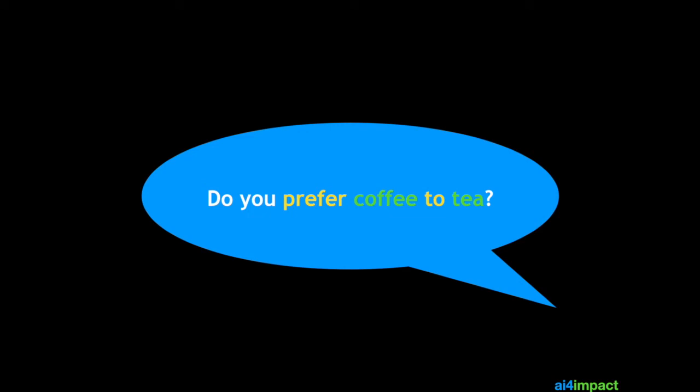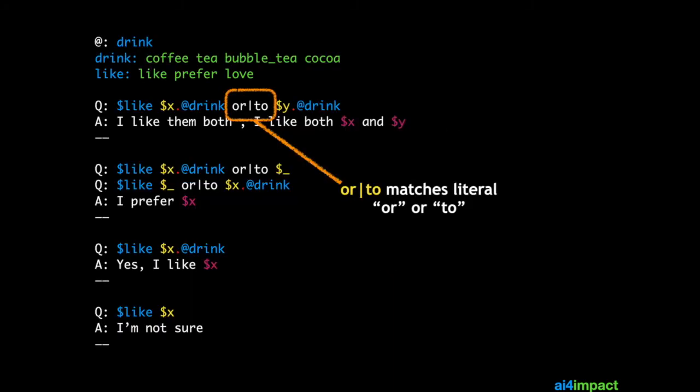Now what if the question is prefer instead of like and to instead of or how would you handle that? So the best way is to create a new type called like so we can match words like like, prefer, love, crazy about etc. Now we've done that already in previous sessions.